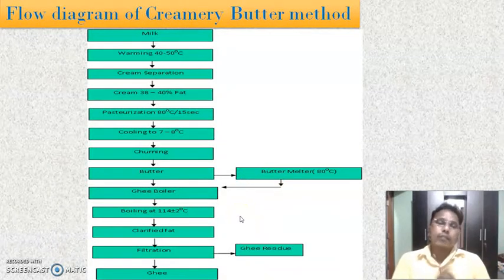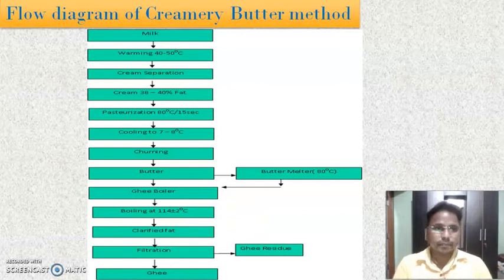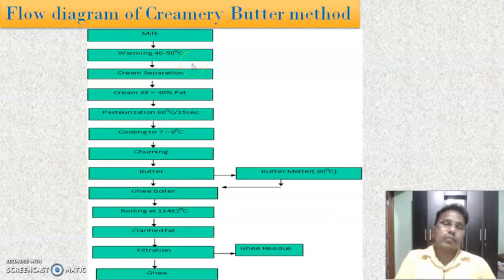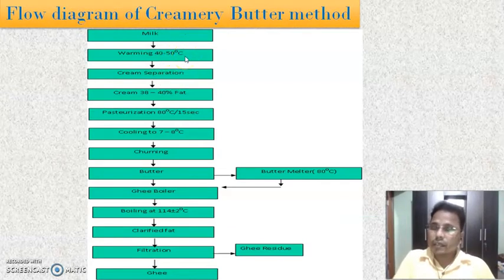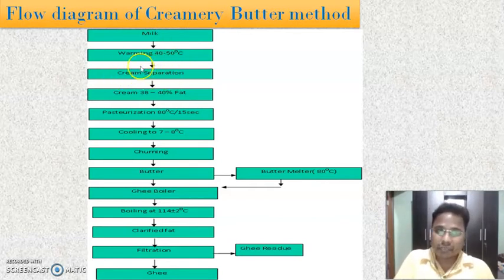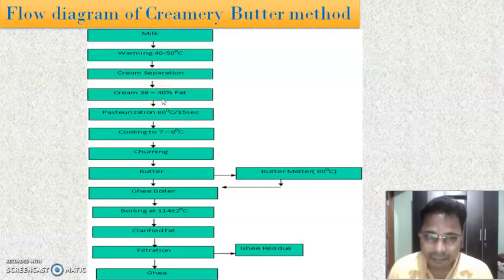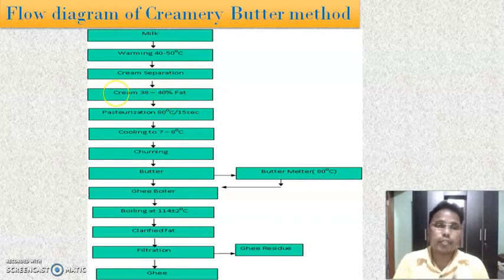This is the flow diagram of the Creamery Butter method. The first point is milk. The milk is preheated to 40 to 50 degrees Celsius, because the next step is cream separation. When the milk is preheated, it becomes very easy to separate the cream from the milk. For efficient cream separation, the cream is separated by a centrifugal cream separation machine. Then this cream is pasteurized to 80 degrees Celsius for 15 seconds.